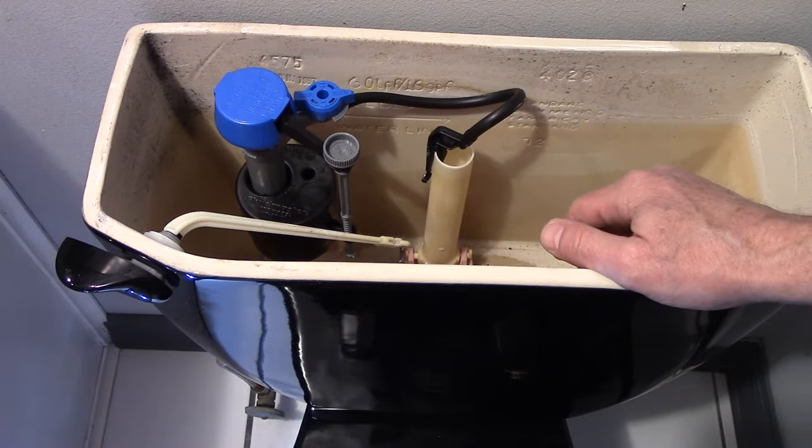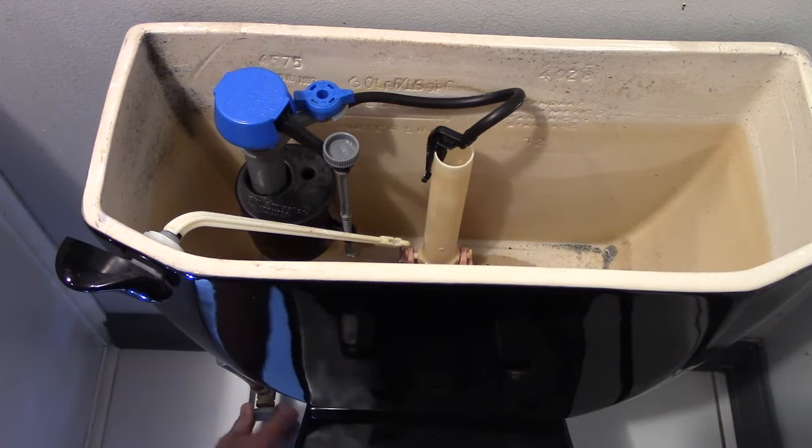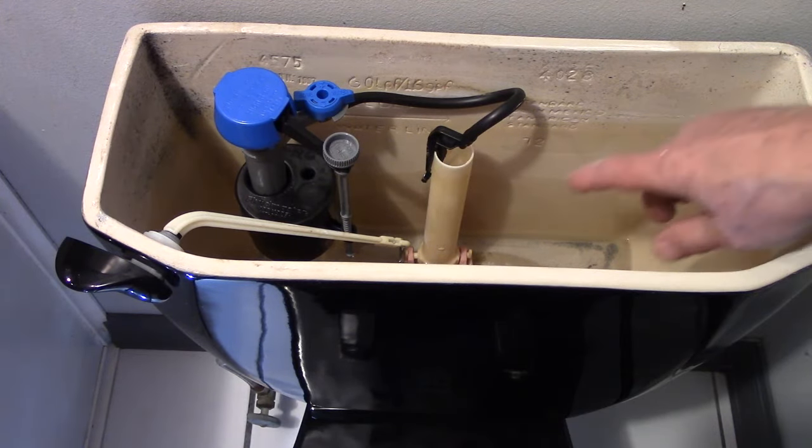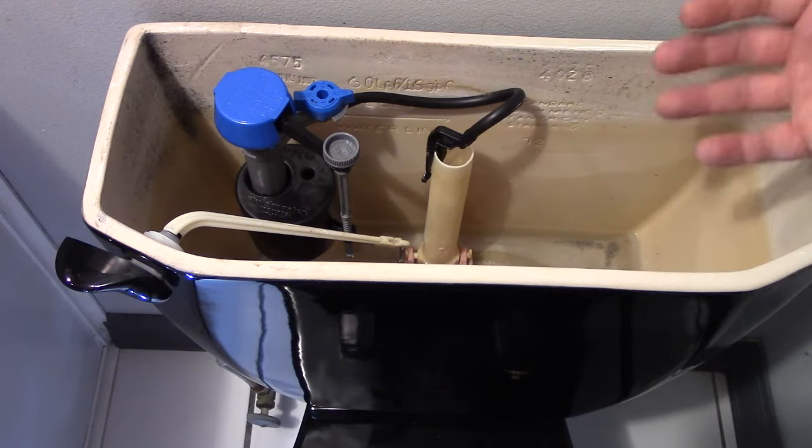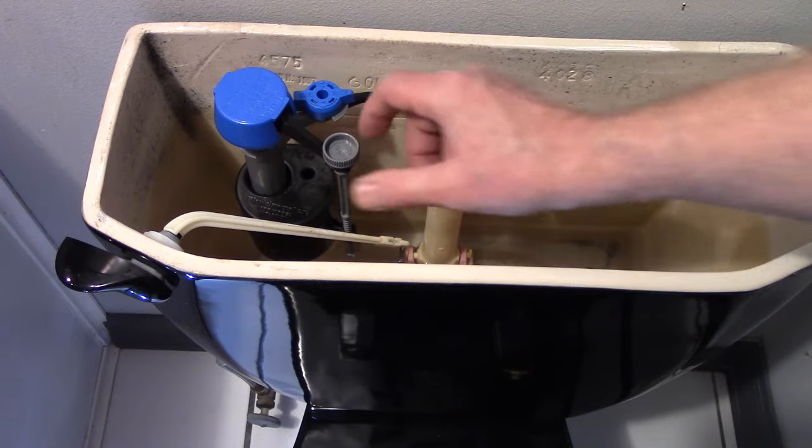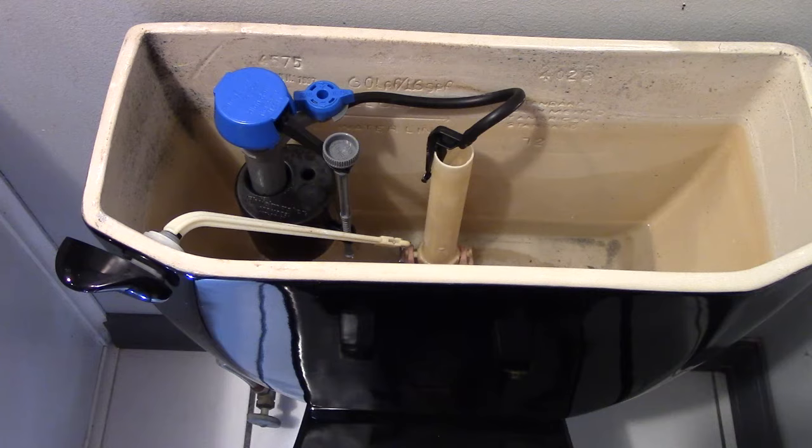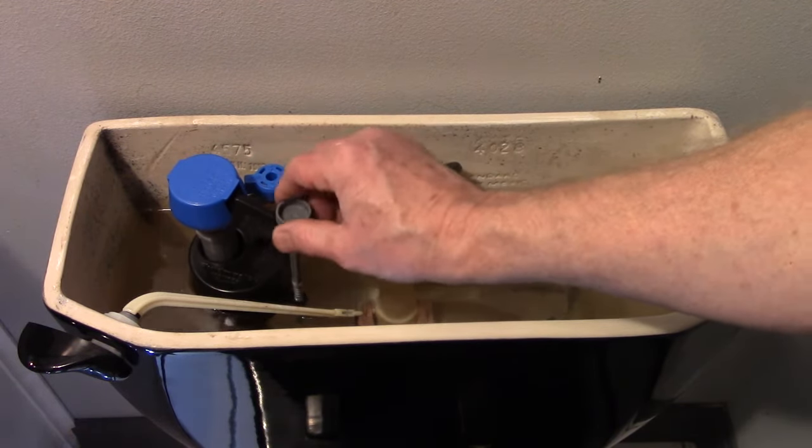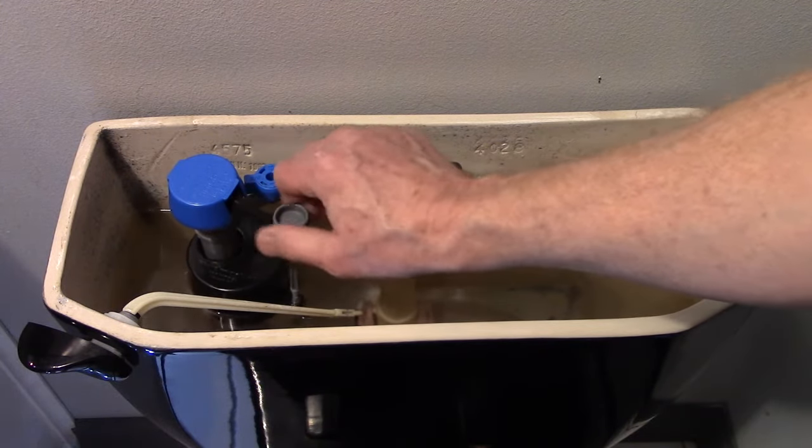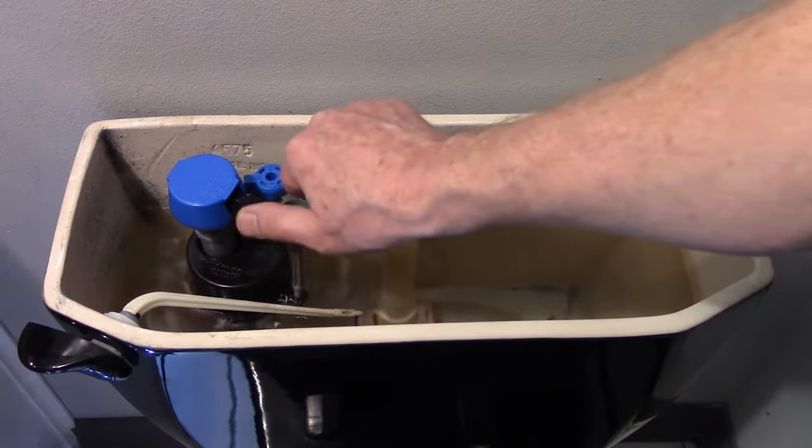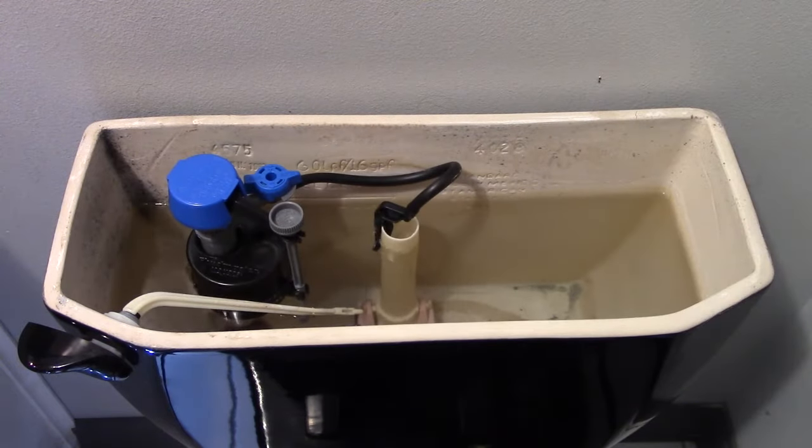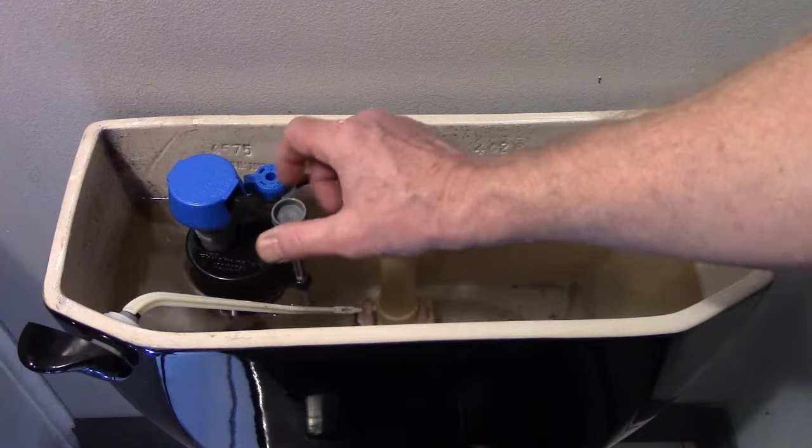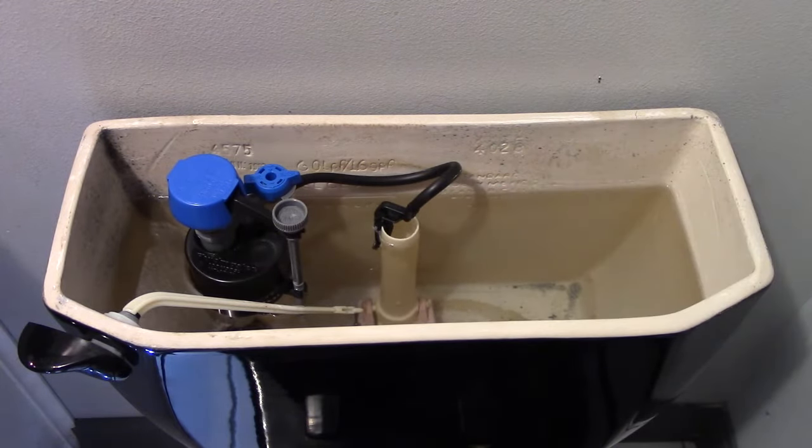First thing we're going to do is turn on the shutoff valve and see how high the water is in the tank. I want the water to stop just about a half an inch below the top of this tube for the best flush. And I'm going to adjust that level with this thumb turn that's connected to the float. We'll let it fill first and see where it stops. It stopped a little low. I'm going to turn this clockwise so that it puts a little bit more water into the tank. And that's pretty close. I might actually turn this down a little bit and we'll flush it again. I want it about a half an inch below the top of that tube.